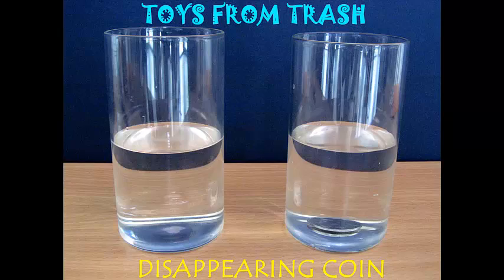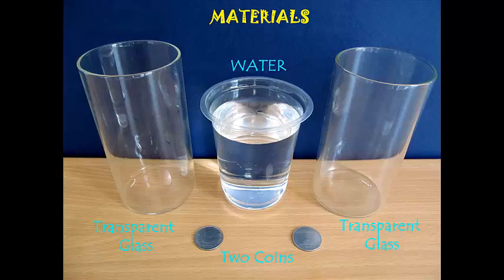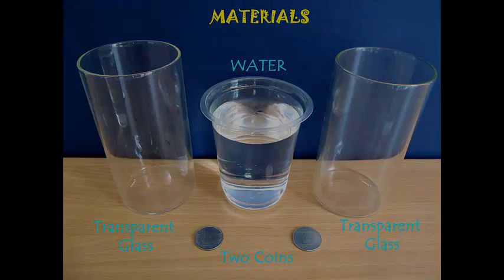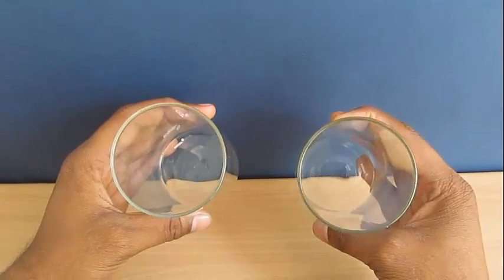You can perform this simple trick of making a coin disappear by using two transparent glasses and two coins. This experiment uses the properties of refraction of light.